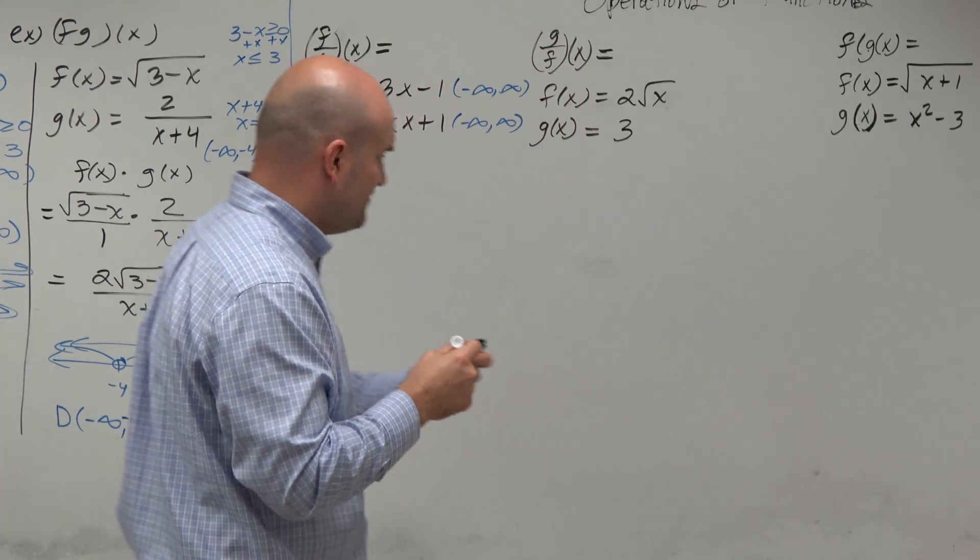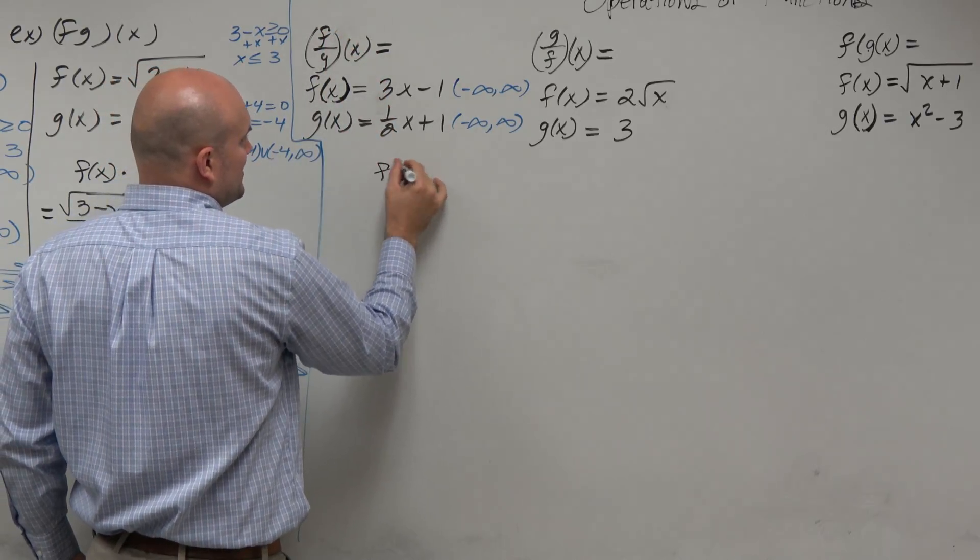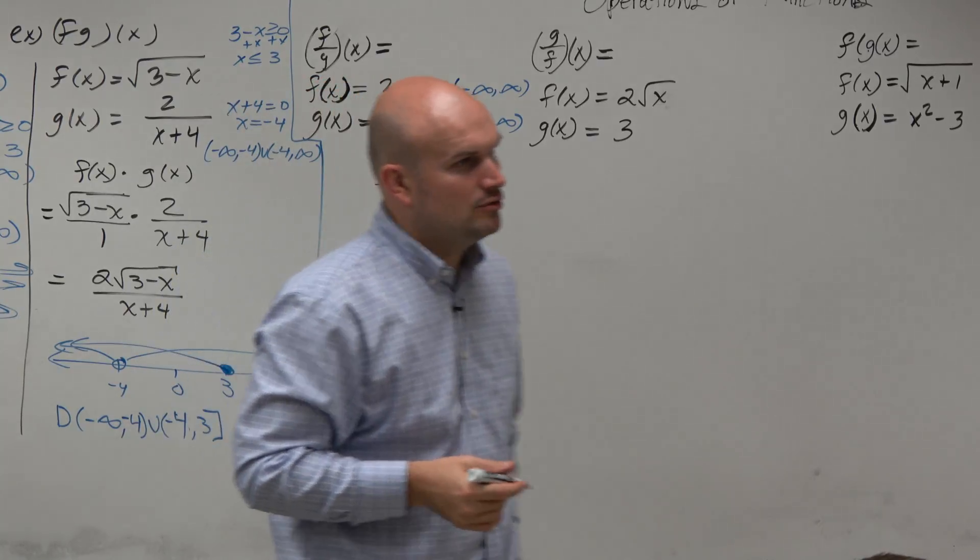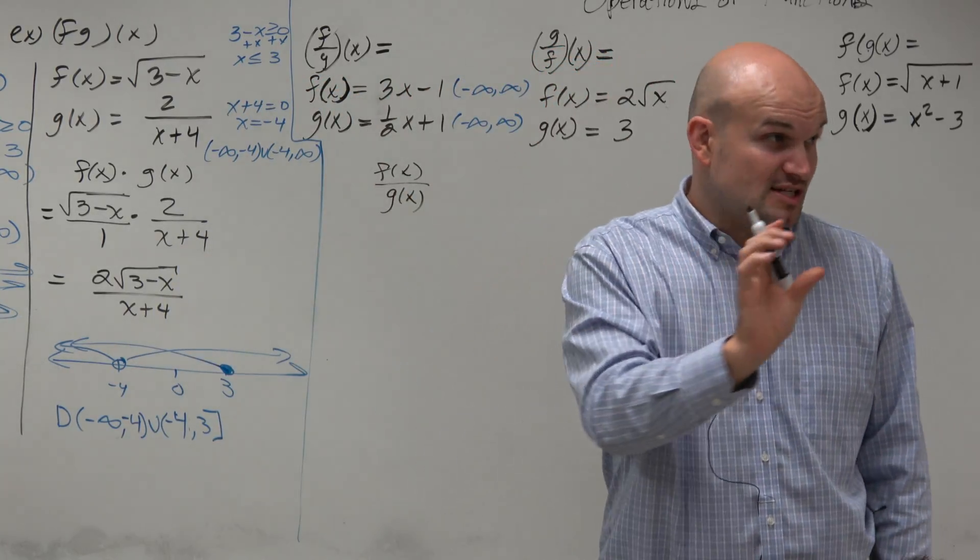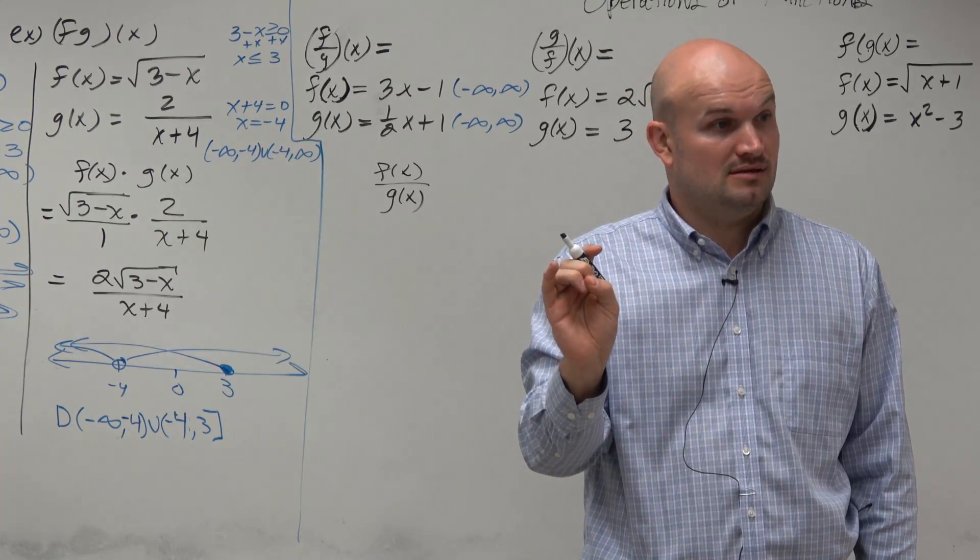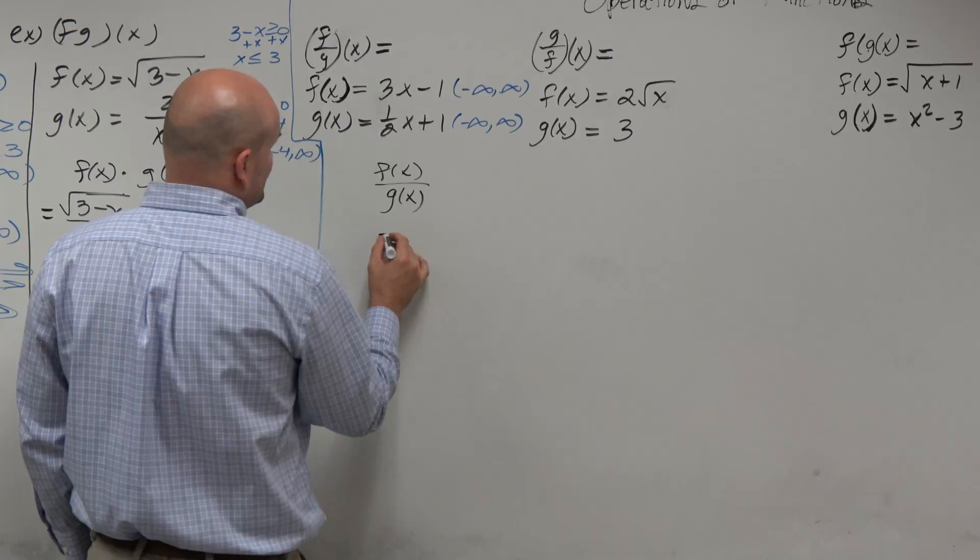But then we think about what division does. Division adds a different constraint. F divided by g of x basically means f of x divided by g of x. Well, that's not very cool because now I'm putting a function that was all real numbers in the denominator. Now I have a new constraint. The denominator can't equal 0. So let's see what that looks like.